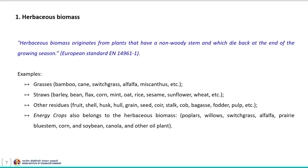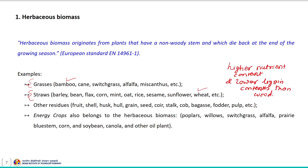Herbaceous biomass originates from plants that have a non-woody stem and which die back at the end of the growing season. This herbaceous biomass includes most agricultural crops and grasses including bamboo and wheat straw. In general, herbaceous biomass will have higher nutrient content and lower lignin content than wood materials. Because of heterogeneity in this class of biomass, herbaceous biomass is variable in composition, showing great variation.